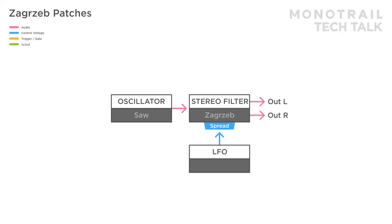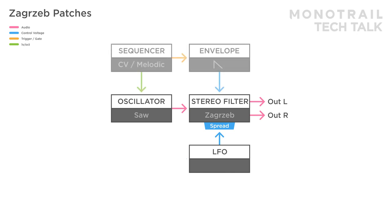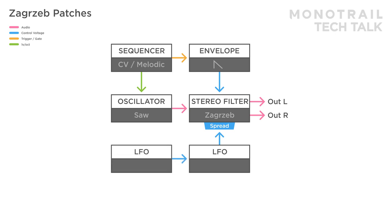Here's the same patch but slightly more musical. A sequencer is added to create a melody and trigger an envelope modulating the filter, and a second LFO is modulating the speed of the first LFO.